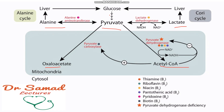Pyruvate can be converted into alanine with the help of an enzyme alanine aminotransferase, or ALT. Alanine can then be taken to the liver and converted to glucose again with the help of the alanine cycle, which we have already covered in a previous video.